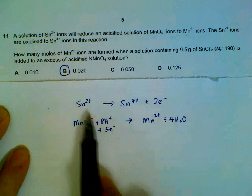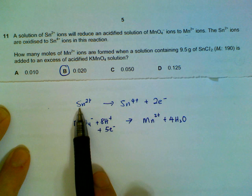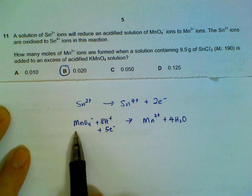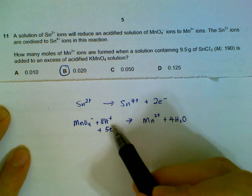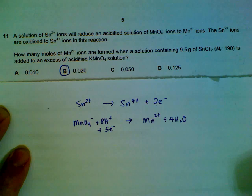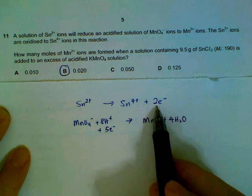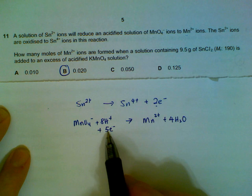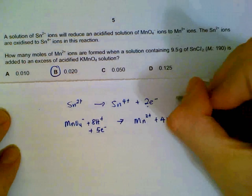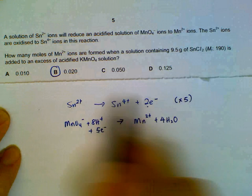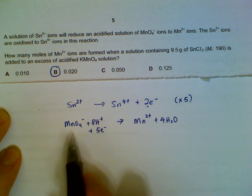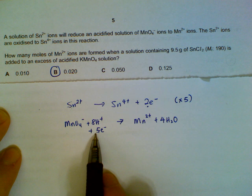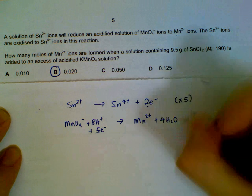So now what we are interested in, as I mentioned, is to find out how many moles of Sn²⁺ actually reacts with MnO₄⁻. We have to change the number of electrons to be the same before we can do a comparison. We have 2 electrons on the first equation, 5 electrons on the second equation. So if you want to find a common multiple, we will have to multiply this by 5 to make this to be 10 electrons, and multiply the second equation by 2.